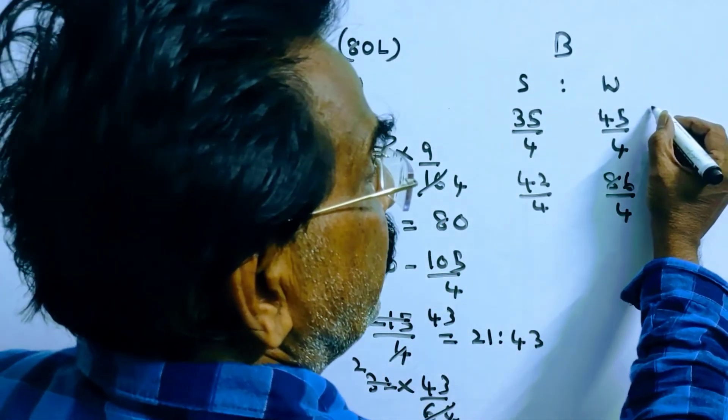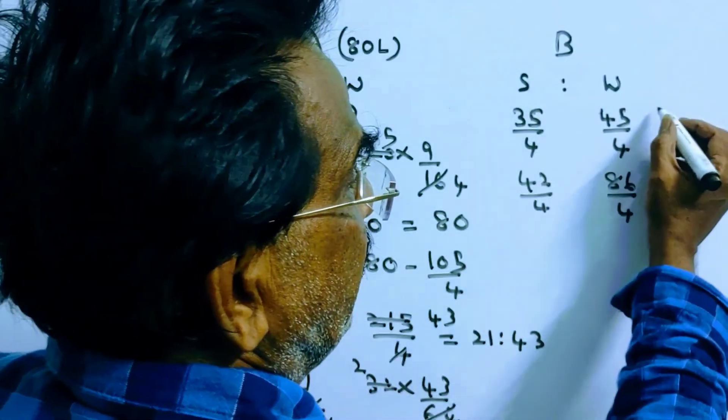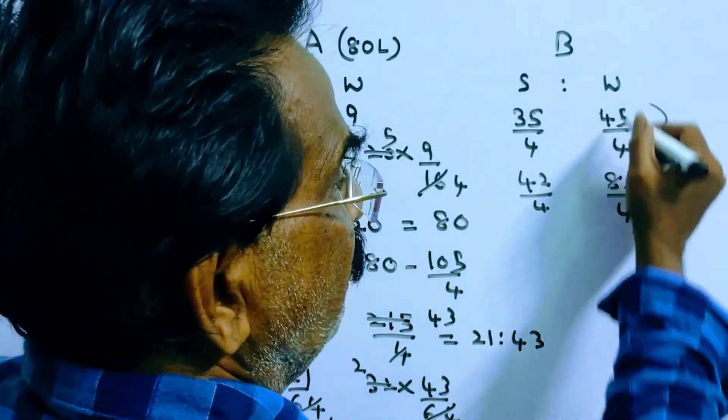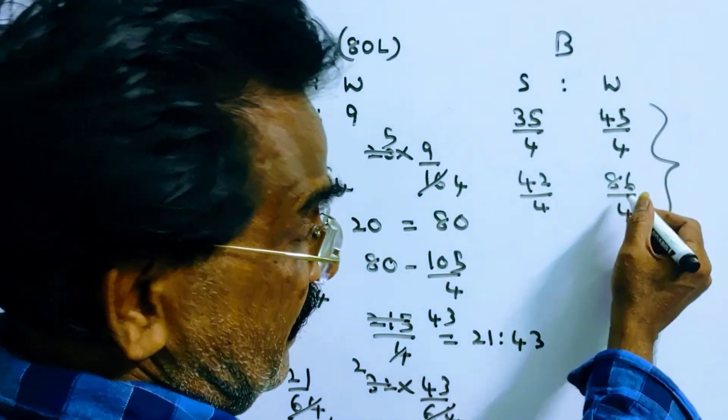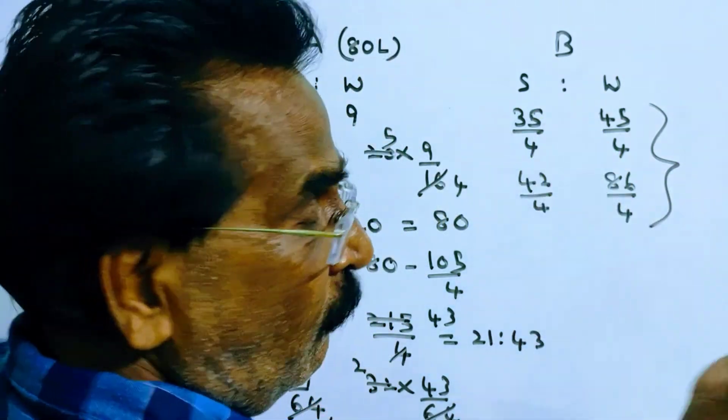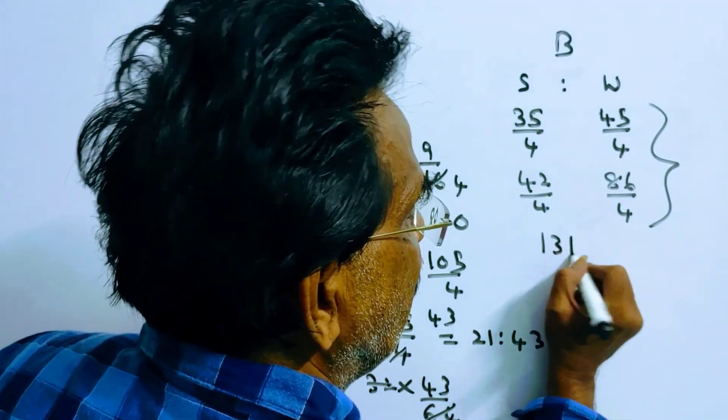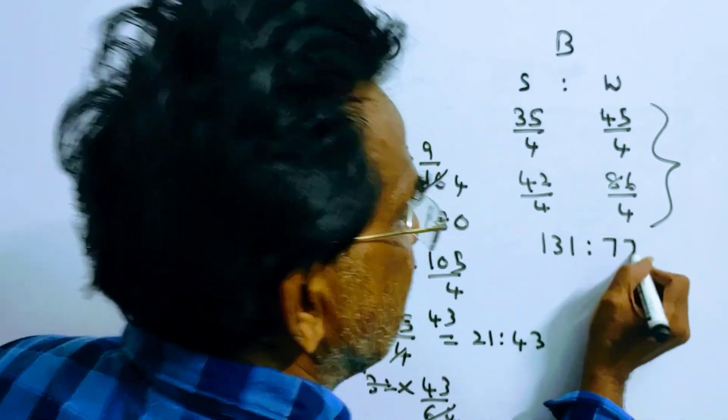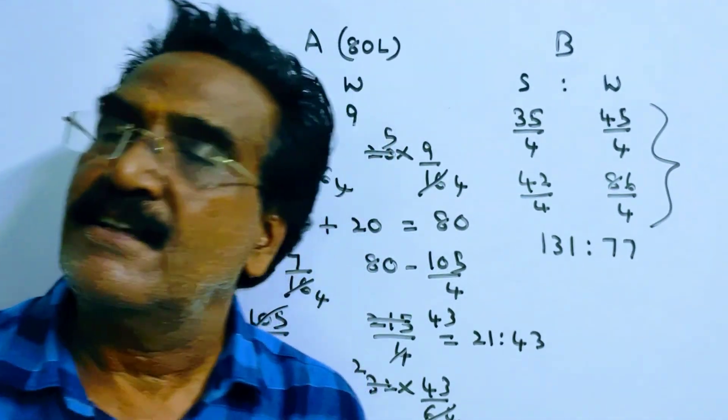Now the ratio of spirit and water in container B is: spirit = 35/4 + 42/4 = 77/4, water = 45/4 + 86/4 = 131/4. After canceling 4, the ratio is 77:131. Wait, 131:77 is the required answer. Thank you.